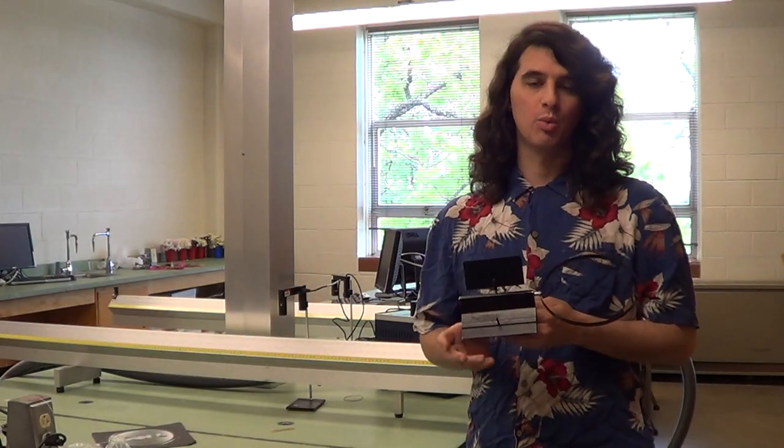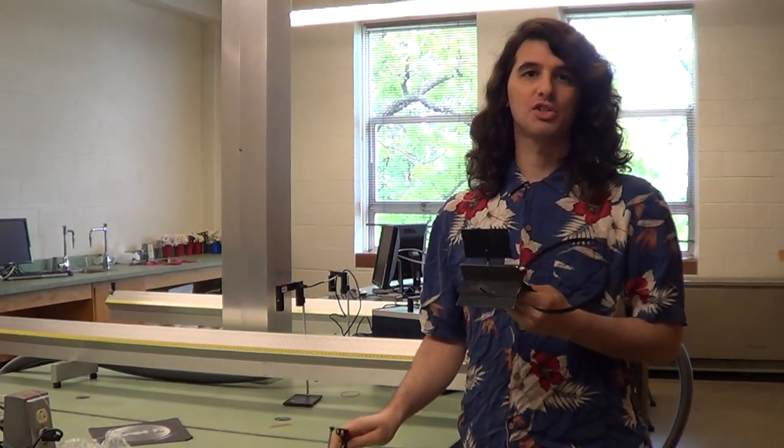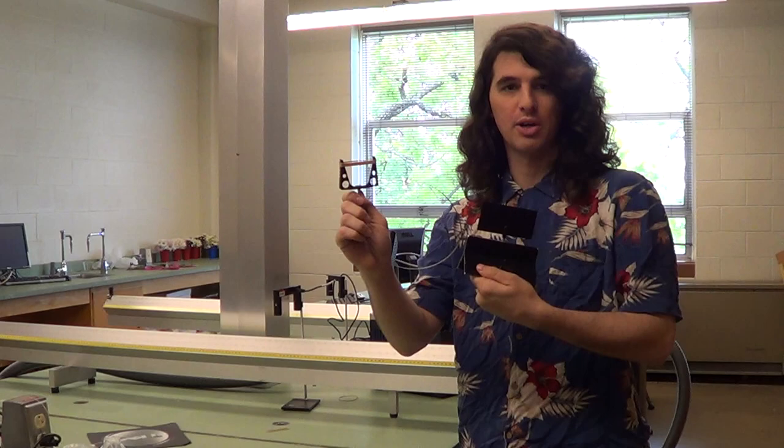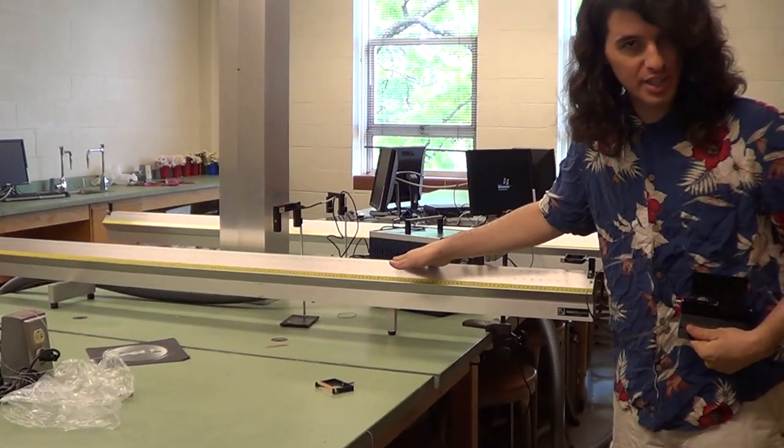Your equipment for this experiment will consist again of the glider car, the vane, and an assortment of various springs. This being a rubber band, and this being a metal spring. In addition, we have the glider track, which of course is frictionless.